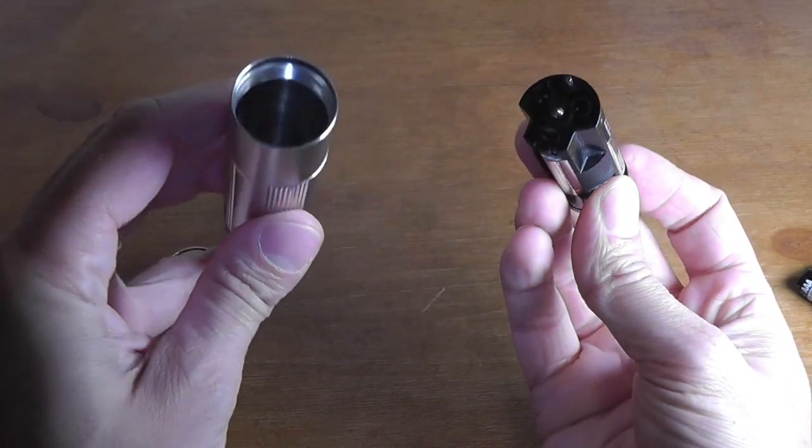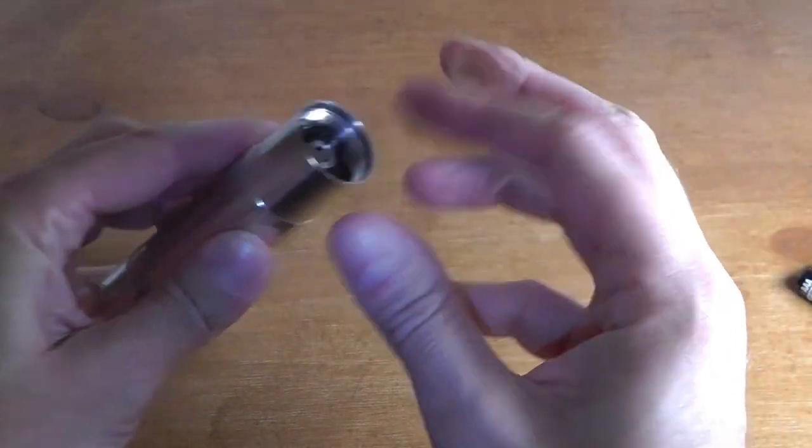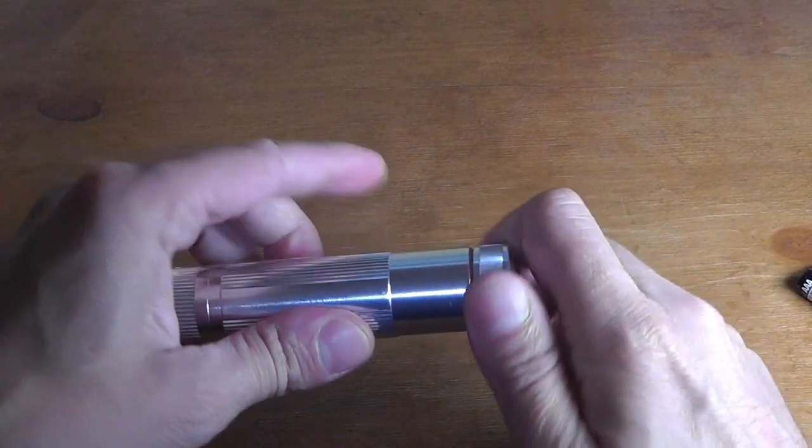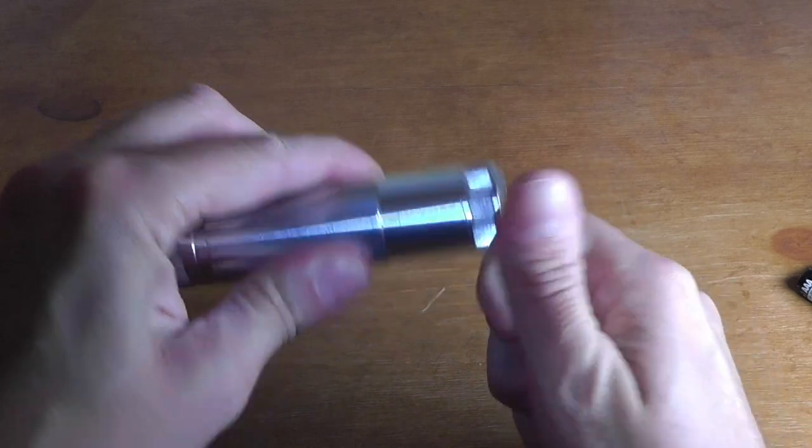Remember the negative side goes where the spring is. It goes in first. And then you put the battery pack back in. And I screw the lid back on. And then let's see.